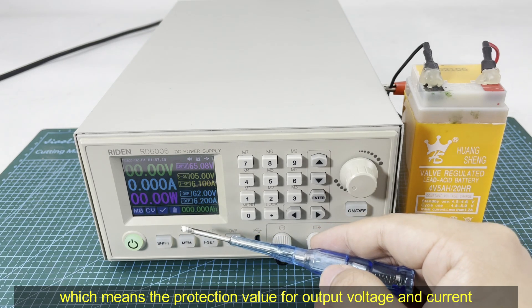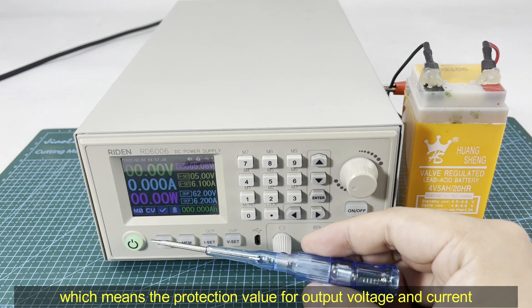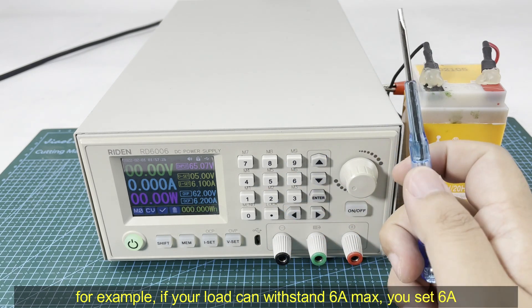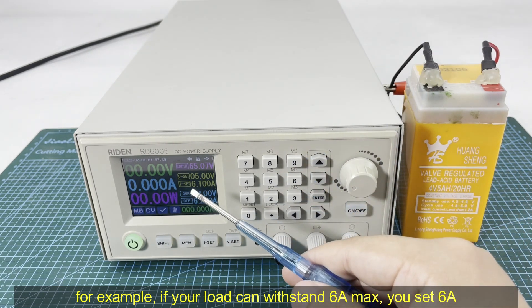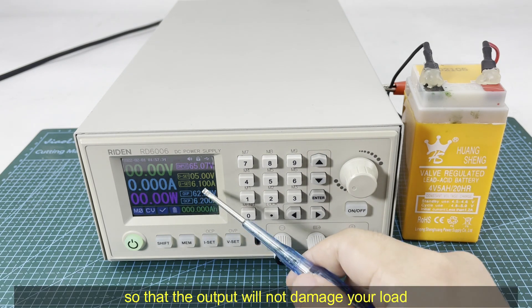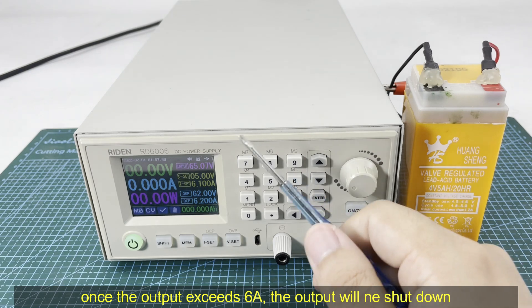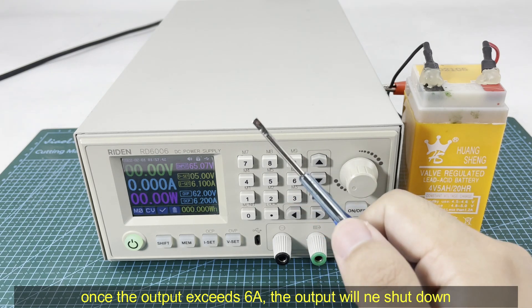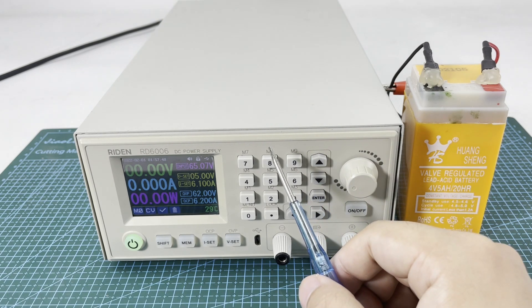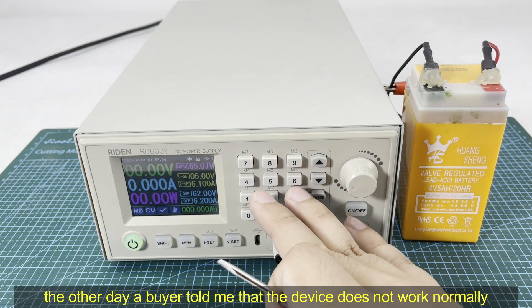For example, if your load can withstand 6 amps max, you set 6 amps so that the output will not damage your load. Once the output exceeds 6 amps, the output will be shut down. The other day a buyer told me that the device does not work normally.